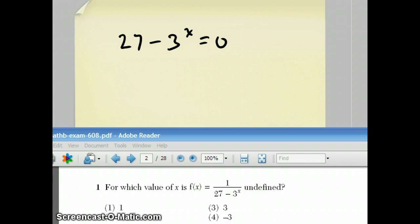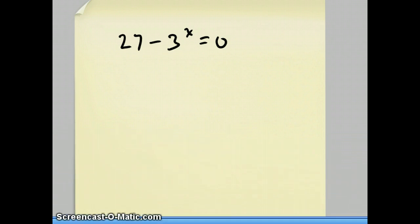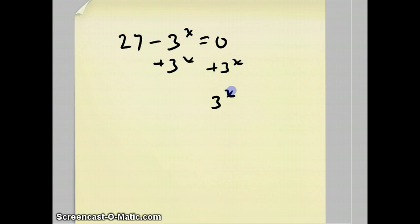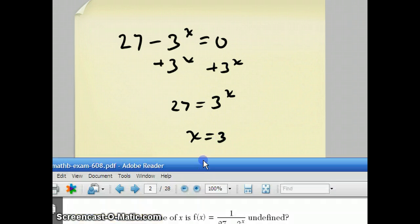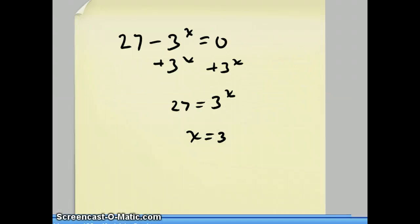And you solve that by adding 3^x to both sides. And you get 3^x = 27. And then by trial and error, you'll get x = 3, which should be choice number 3.